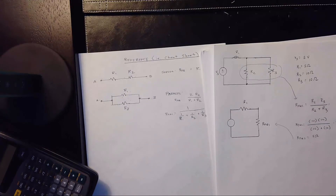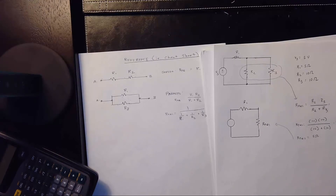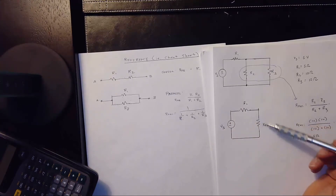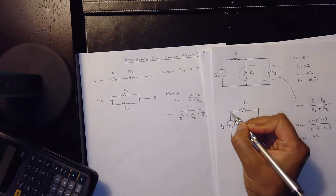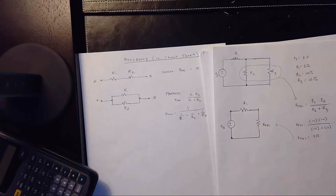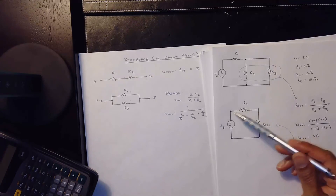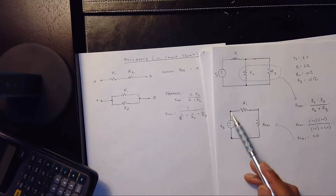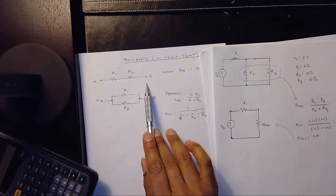Our objective is to reduce everything down to one resistor. Looking at the redrawn circuit again with VS: if I travel from one terminal to the other, does it branch one-to-one? No — it clearly covers two resistors in one path. So this must be a series connection.